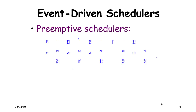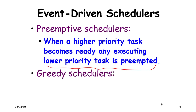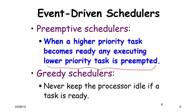For event-driven schedulers which are preemptive, when a higher priority task becomes ready, any lower priority task needs to be preempted. These are greedy schedulers, which means the processor is never kept idle if a task is ready. If any task is ready it keeps executing, but if a higher priority task becomes ready, the executing lower priority task is preempted.